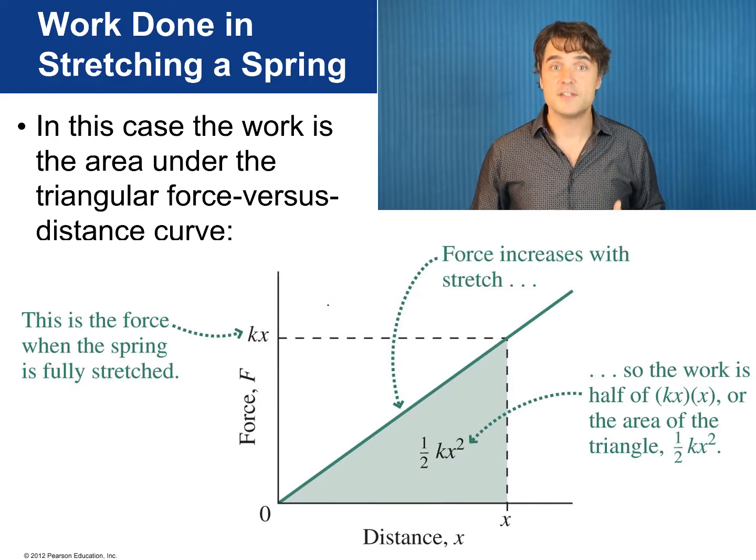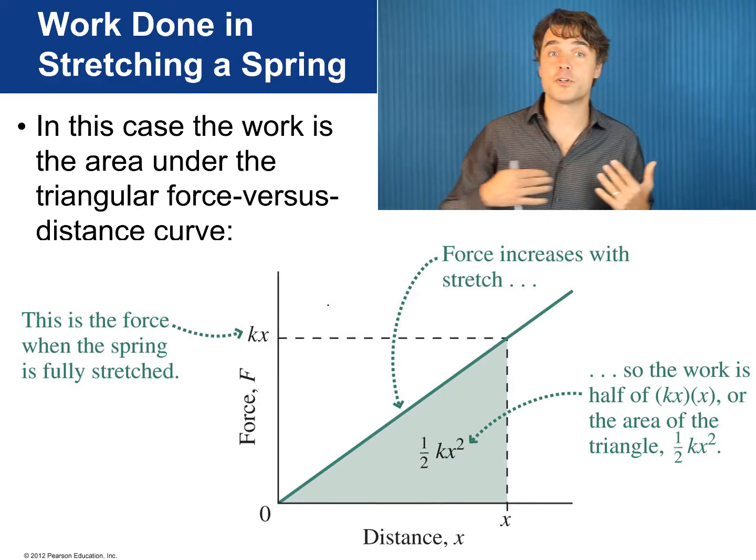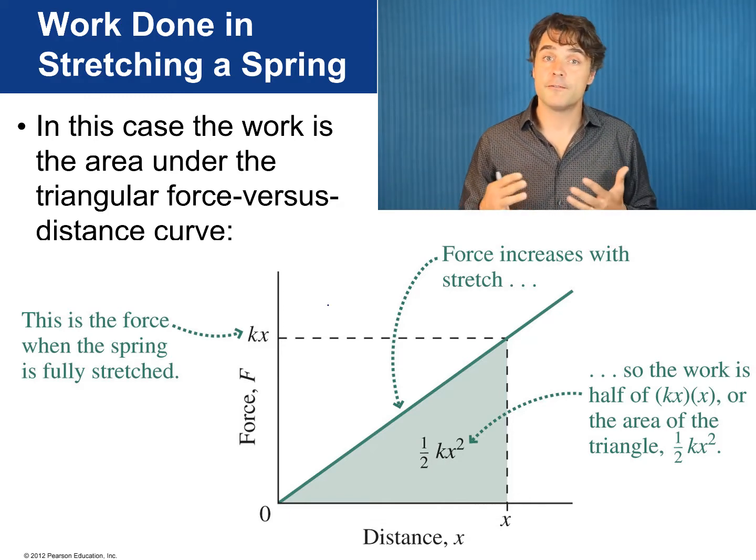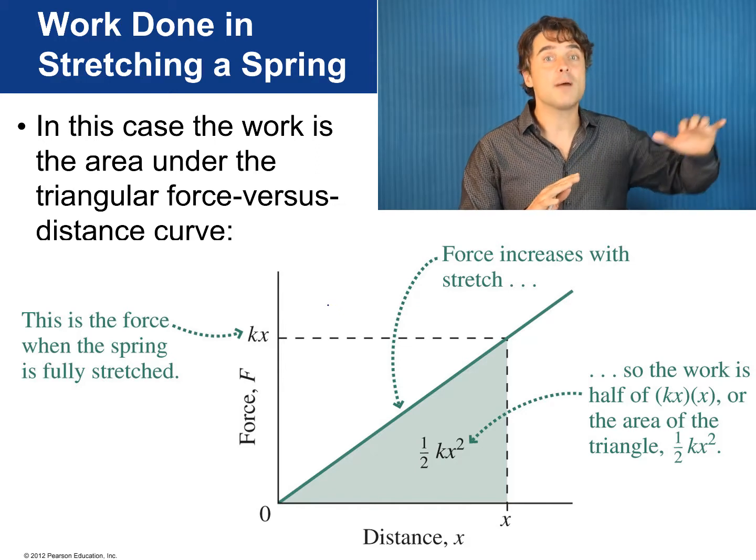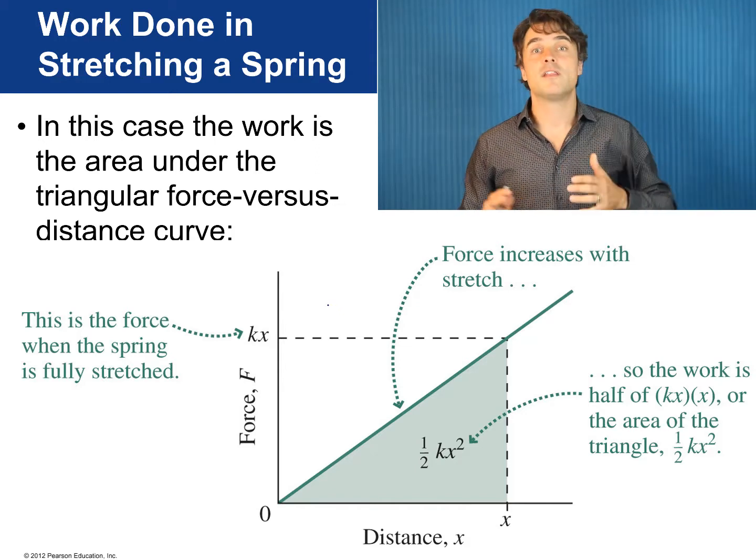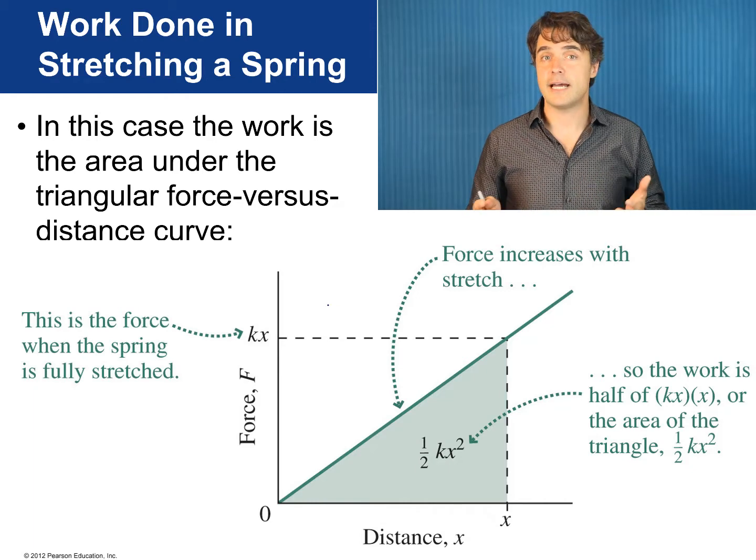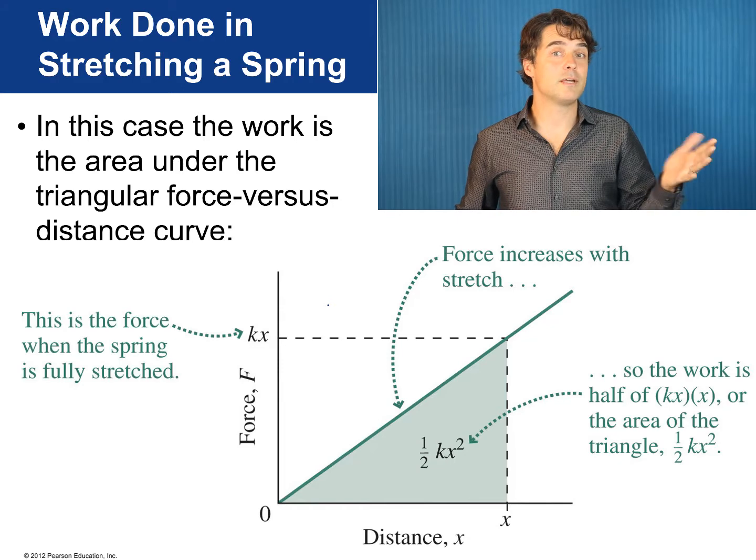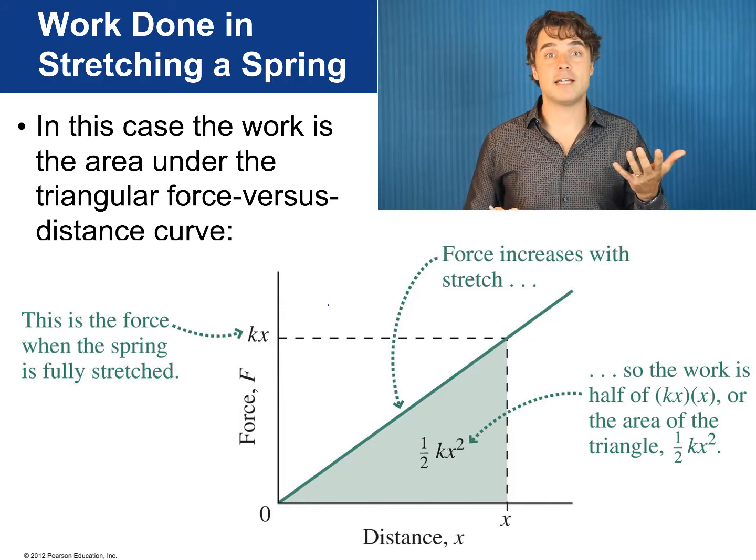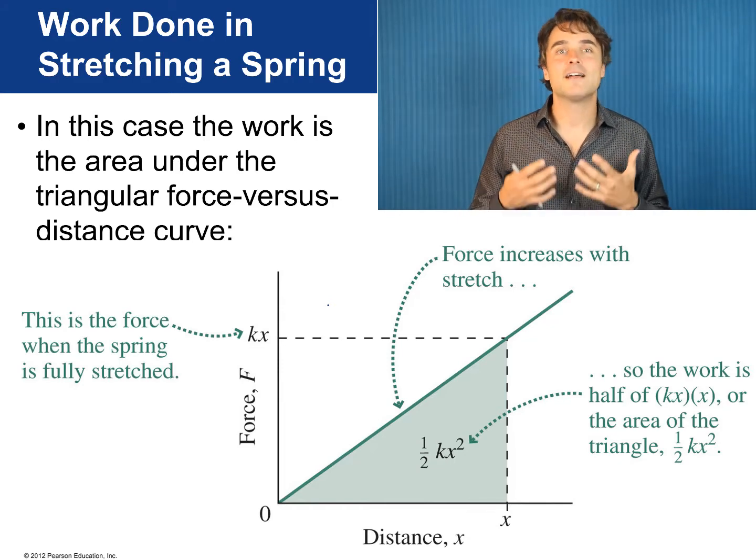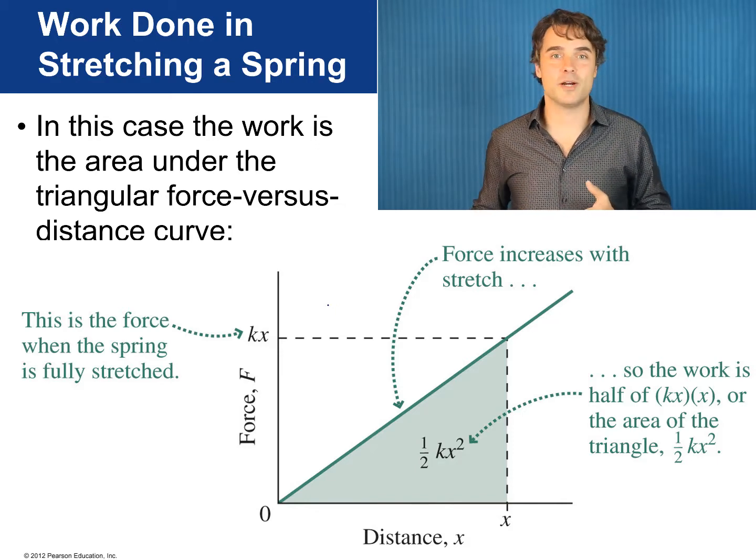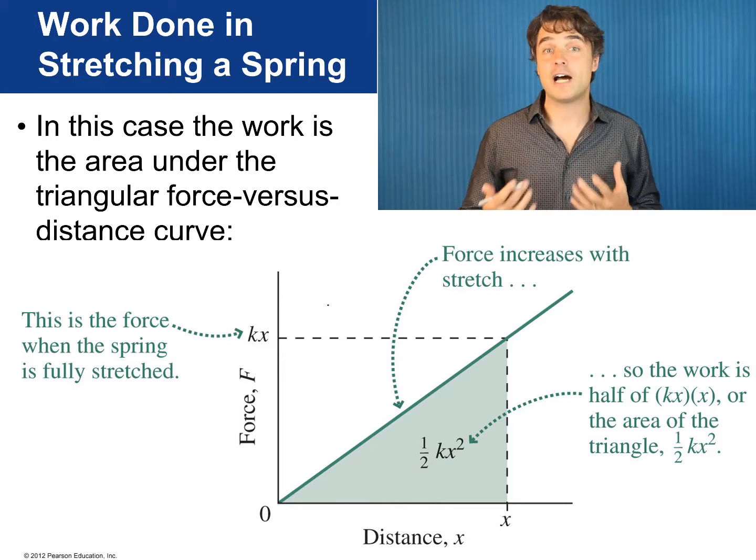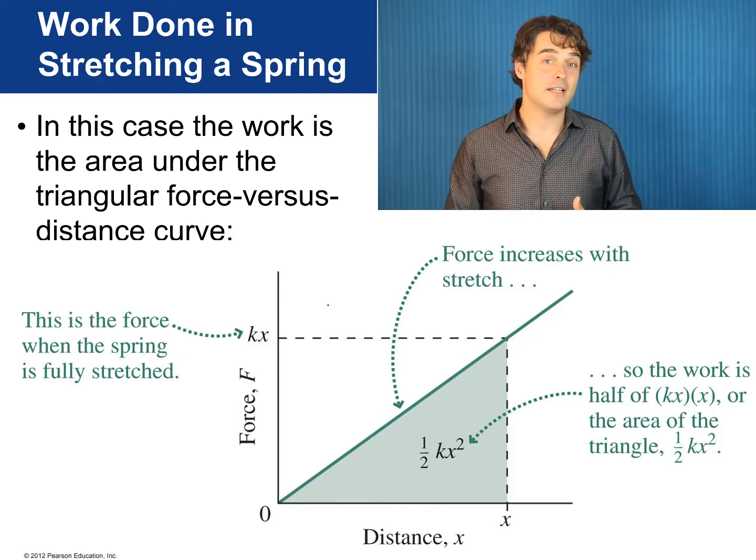Graphically this is the area under the triangular force versus distance curve given by Hooke's law. In the case of doing work on the spring the force starts at zero, and goes up to k times x at the end. The base of this triangle is x and the height is k times x. The area of a triangle is one-half base times height which again is one-half k times x squared. This is called a geometric method of evaluating a simple integral, which can be a handy technique.